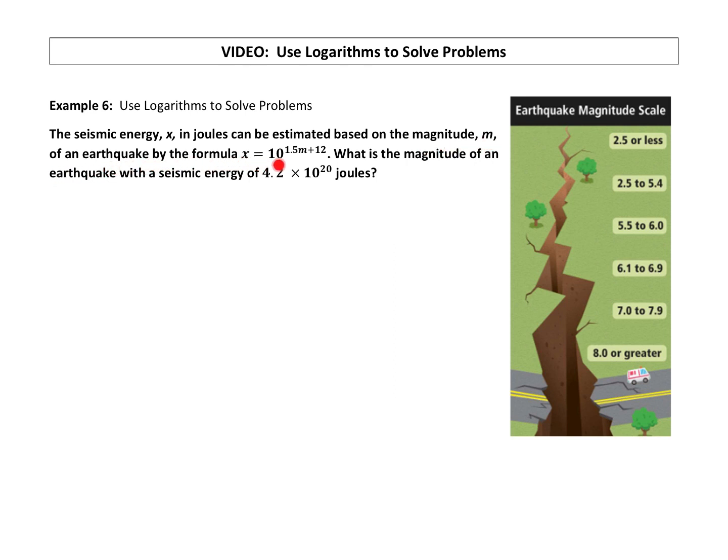the formula X equals 10 raised to the power of 1.5M plus 12. What is the magnitude M of an earthquake with a seismic energy of 4.2 times 10 to the 20th power joules?